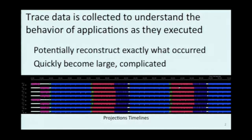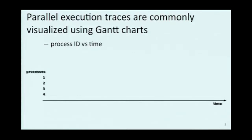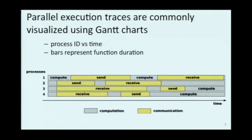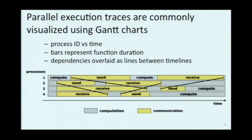Typically, this is done via a Gantt chart. We have one horizontal axis meaning time and another axis meaning processes. In MPI, this is great because the processes and the processing elements are the same, so we get to visualize both at the same time. Each of these processes has its own timeline showing the extents of the function calls made. We also want to see the way that these parallel processes are interacting — the dependencies between them — and these are usually overdrawn as lines. This is pretty easy to understand.